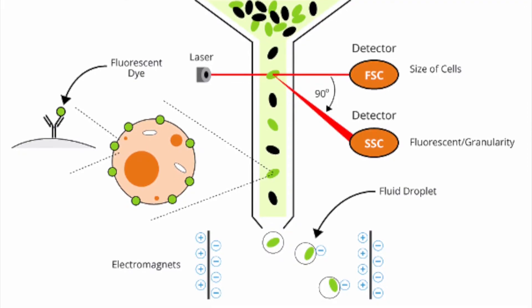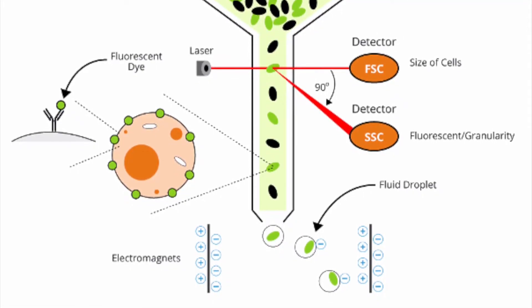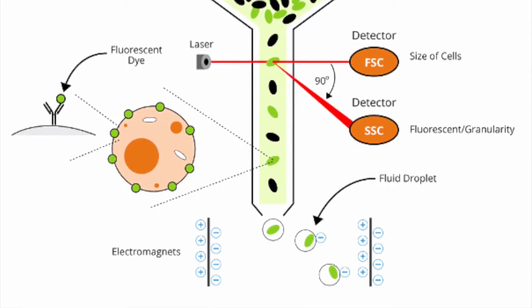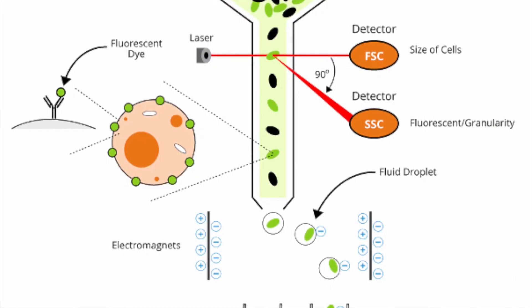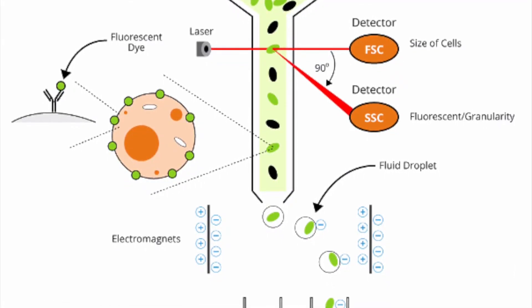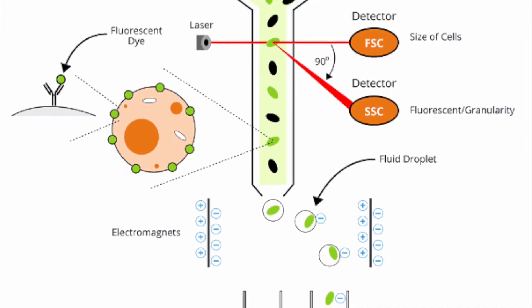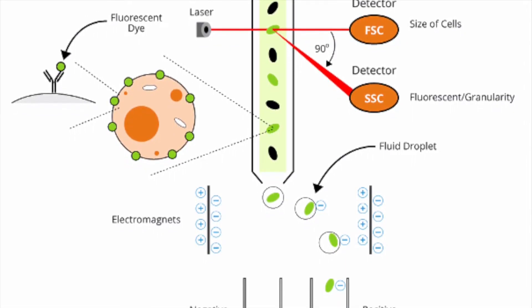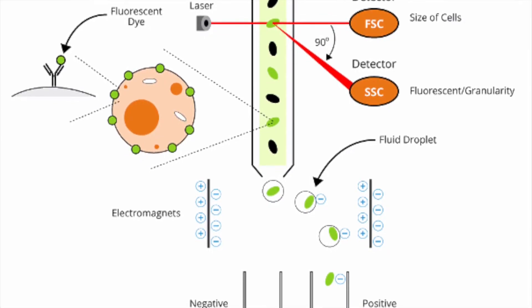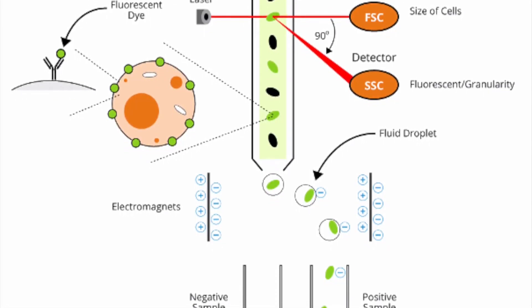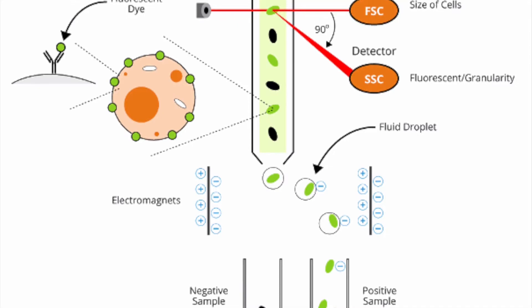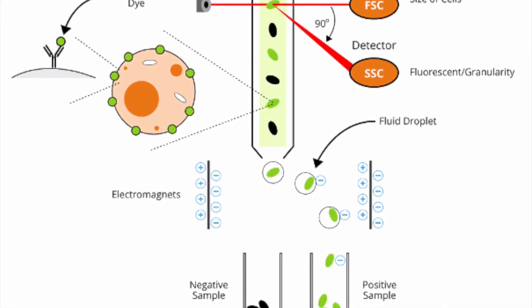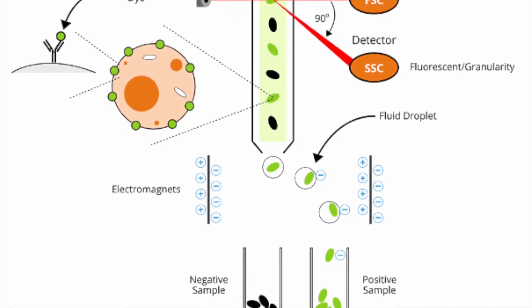Instruments usually have multiple lasers and fluorescent detectors. Here we're showing the forward scatter FSC and the side scatter SSC on the right. These are the fundamental processes of how flow cytometers work if you use flow cytometer as an analyzer to phenotype your cells and detect the functions or detect different biomarkers.